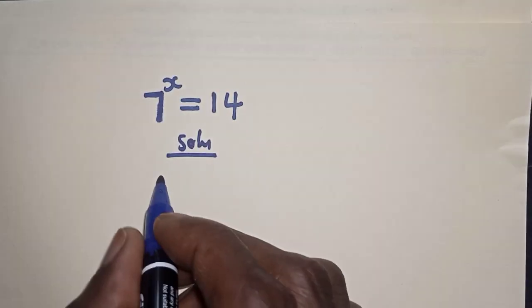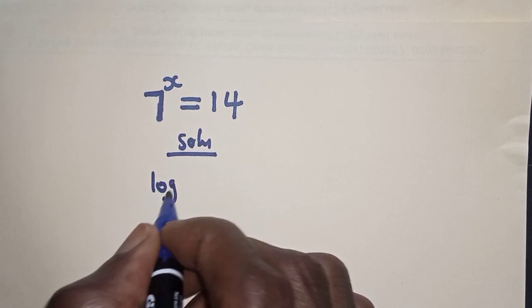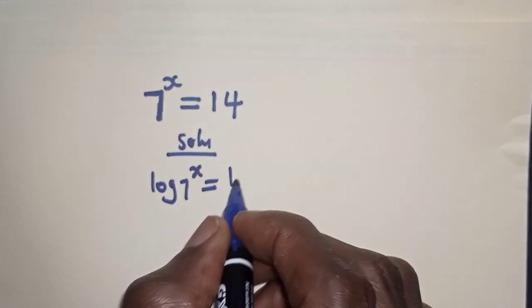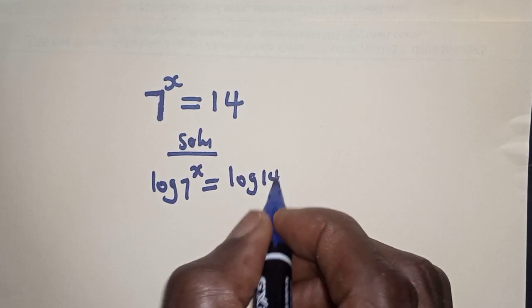Let's take the log of both sides. We have log 7 raised to power s is equal to log 14.